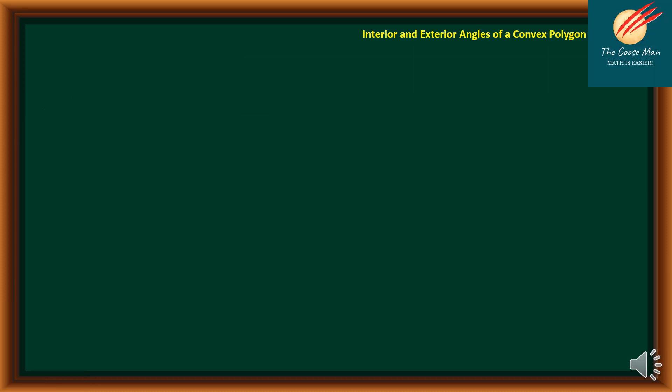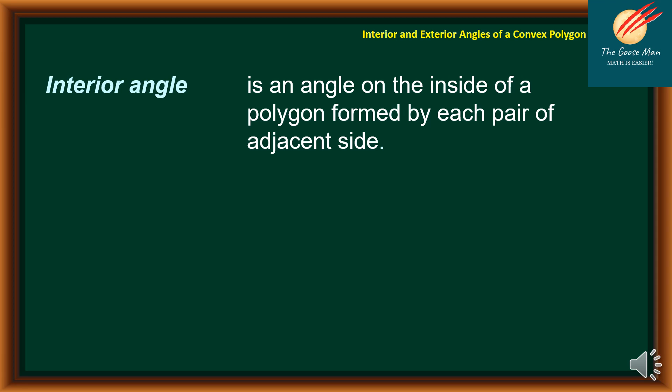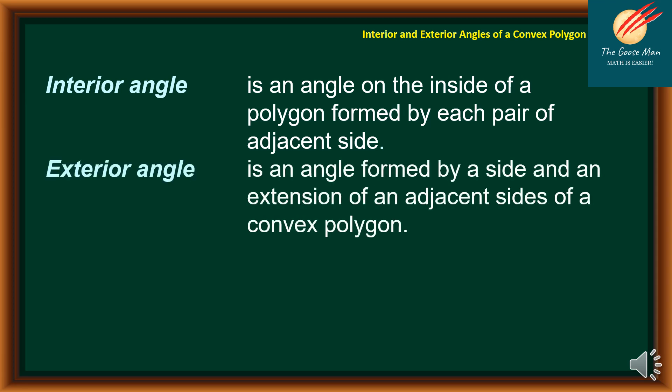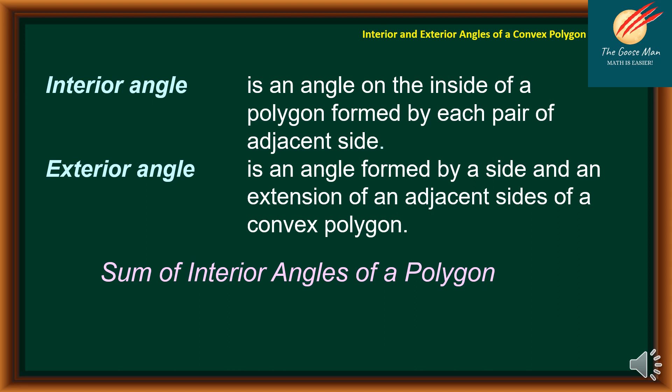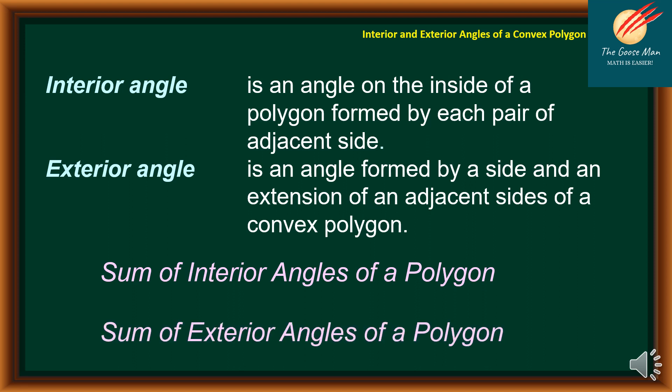Whenever we talk about interior angle, it is an angle on the inside of a polygon formed by each pair of adjacent sides. On the other hand, exterior angle is an angle formed by a side and an extension of an adjacent side of a convex polygon. In this math tutorial video, we'll talk about the sum of interior angles of a polygon as well as the sum of exterior angles of a polygon.